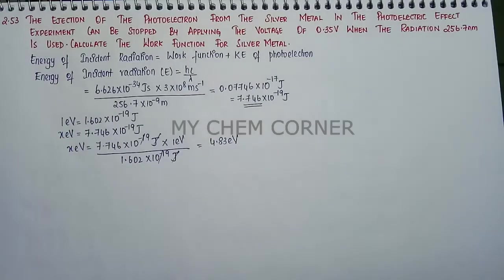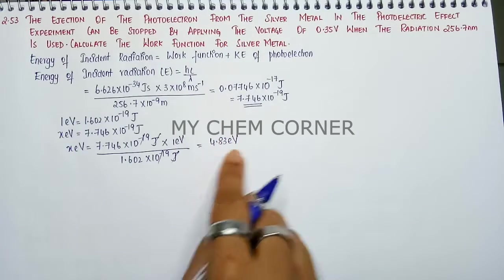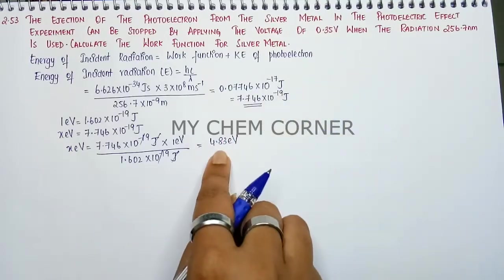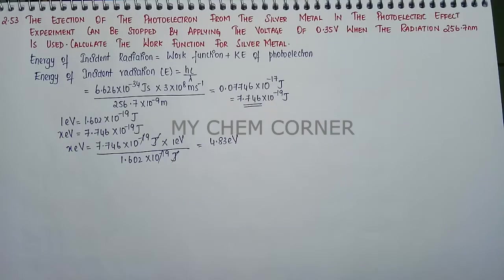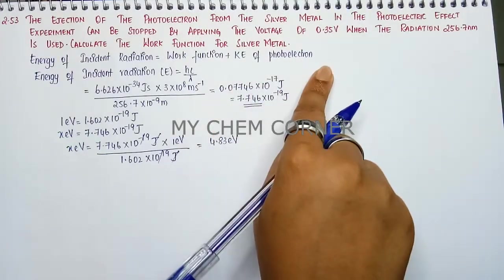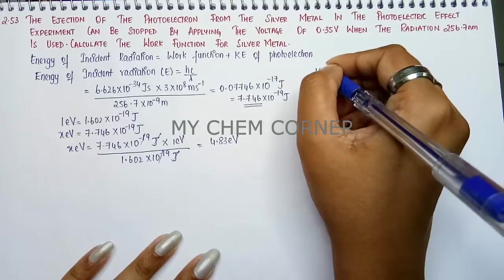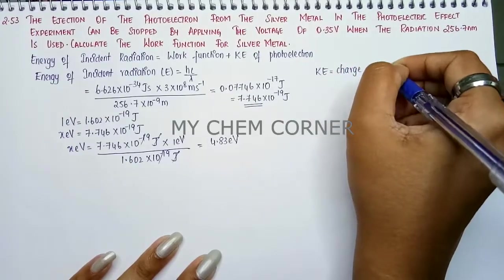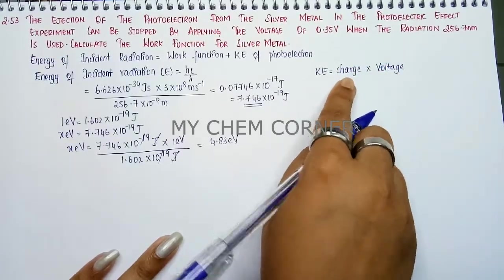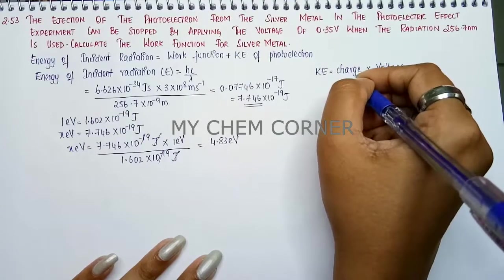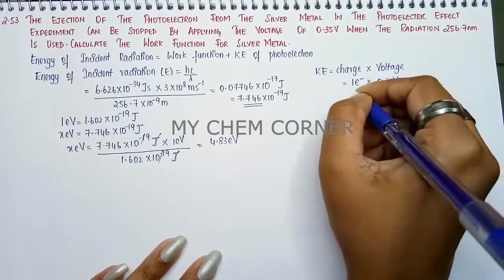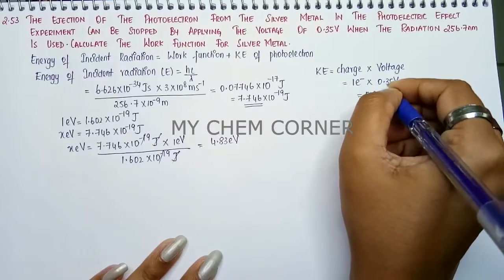Now we have the energy of incident radiation as 4.83 eV. The voltage is given, so we convert it to electron volts using the kinetic energy formula: kinetic energy equals charge × voltage. The charge of one electron is 1, and voltage is 0.35 volt, so kinetic energy equals 0.35 electron volt.